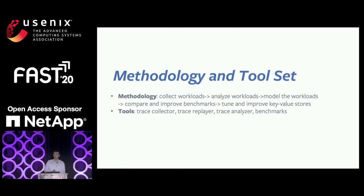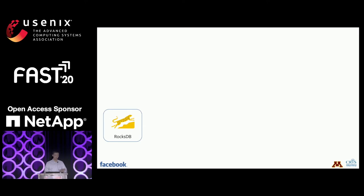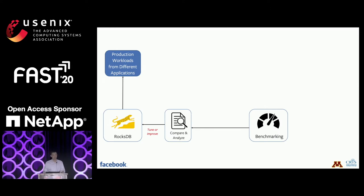In order to answer these questions and address the challenges, we introduce a research flow and methodology. If you are a researcher or a company wanting to start with some key-value store products, you may use a benchmark to test performance and tune parameters. But if the benchmark does not reflect the real workloads, what can you do? So we introduce a full feedback loop to improve the benchmark.